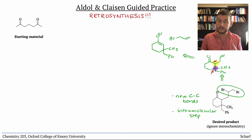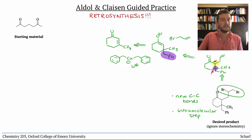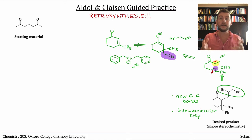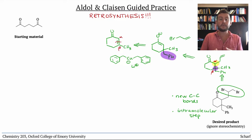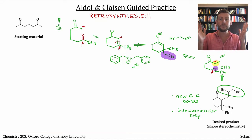And this enolate would have come from addition of di-benzyl lithium cuprate to this alpha-beta unsaturated carbonyl compound. We recently learned that alpha-beta unsaturated carbonyl compounds come from aldol reactions. The retrosynthetic bond breakage looks like this: the alpha-carbon used to be an enolizable position, and the beta-carbon used to be a ketone or aldehyde. And lo and behold, this is the starting material we were given.